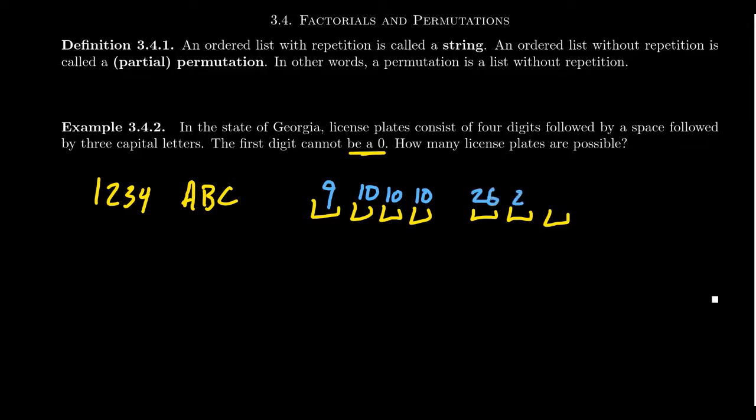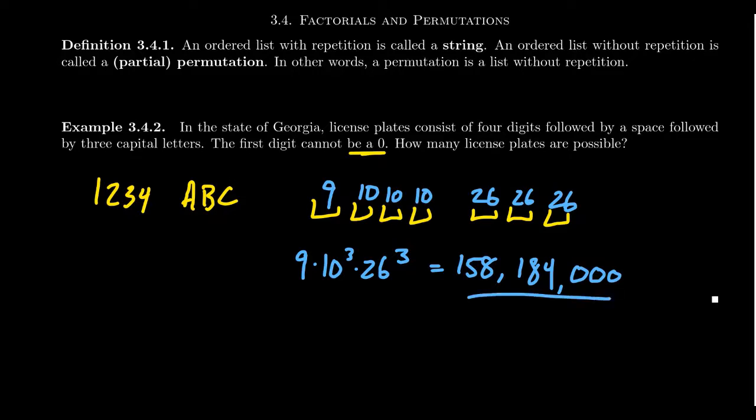The number of possibilities you're going to get is 9 times 10 cubed times 26 cubed as the total number of license plates, which if you multiply those things out, you're going to get 158,184,000 license plates in the state of Georgia.